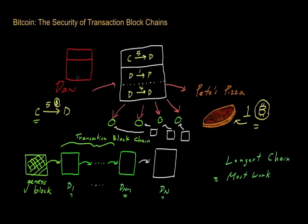It doesn't matter who Fred is, because we know Fred isn't the rightful owner of these Bitcoins. What Dan is going to try to do is take those five Bitcoins he got from Carol and assign them over to Fred. We know this is something we don't want to allow because that would mean Dan was able to spend these five Bitcoins twice over.